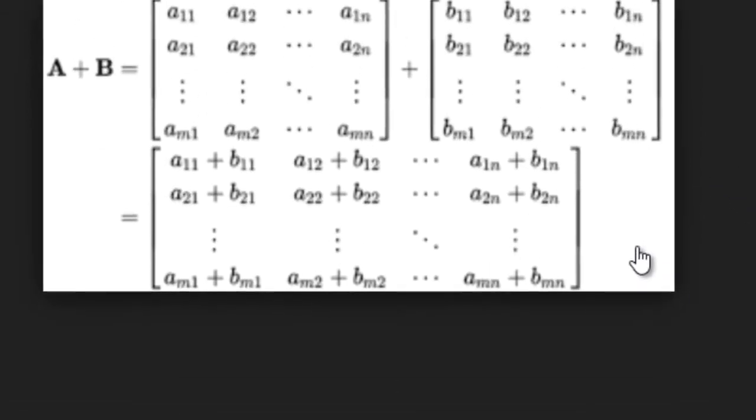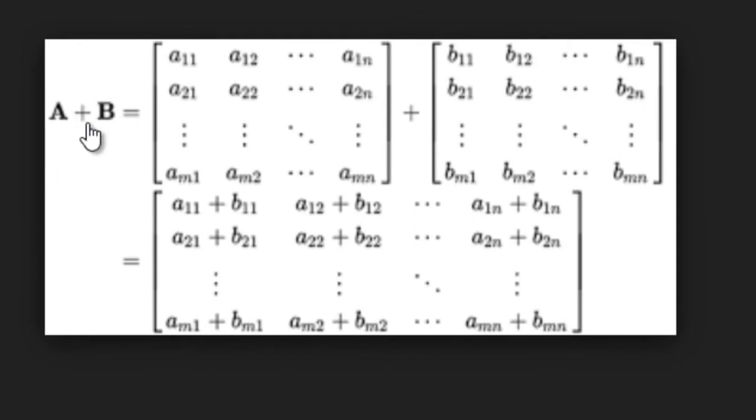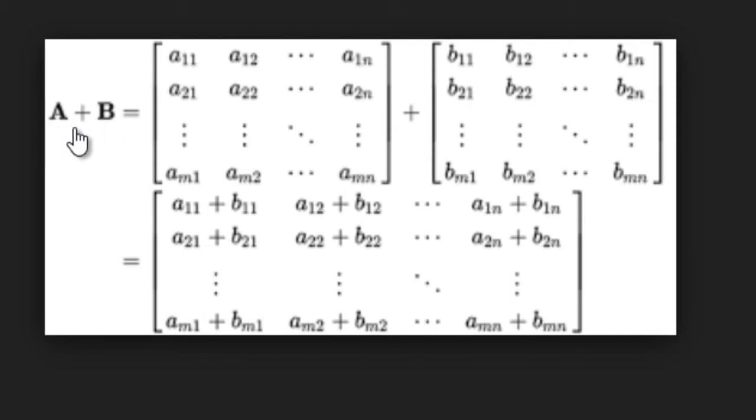Let's consider that we have two matrices of sizes M cross N. You need to make sure that both matrices for this operation have the same order, that is they are of the same sizes. So if A has M rows and N columns then B also needs to have the same number of rows and columns. Let's say we have two matrices A and B of order M cross N, that is M number of rows and N number of columns.